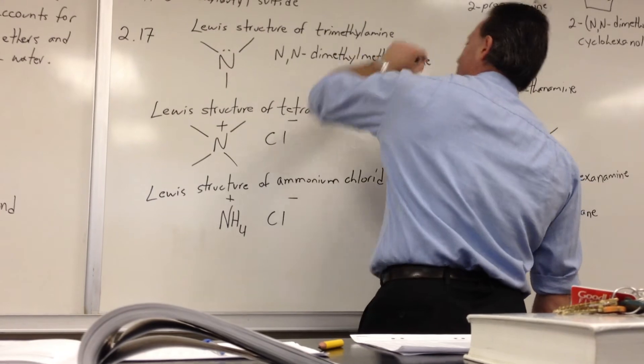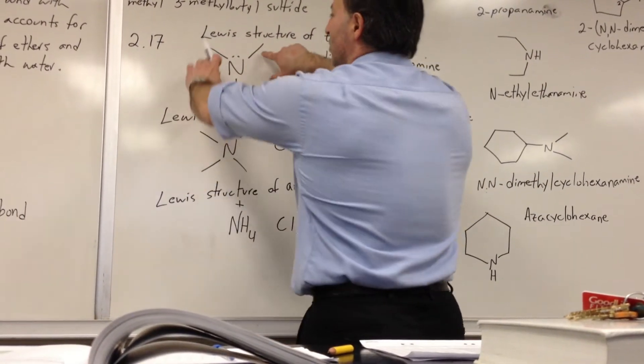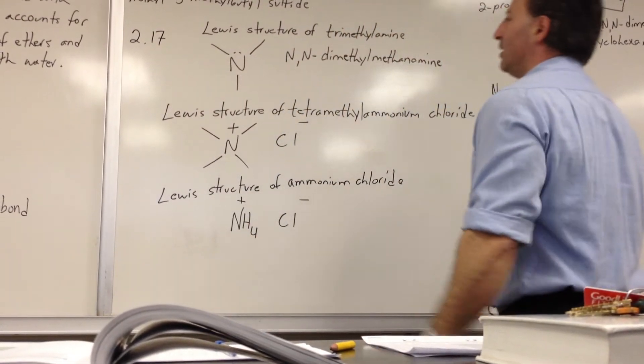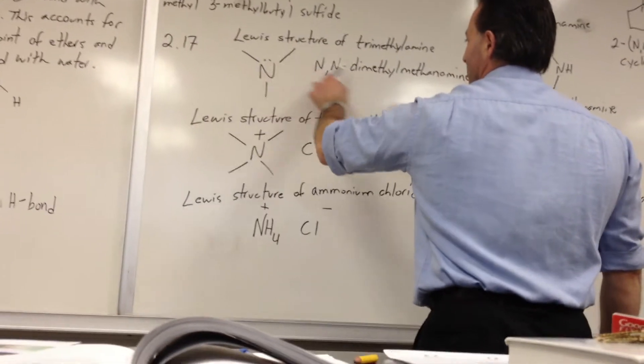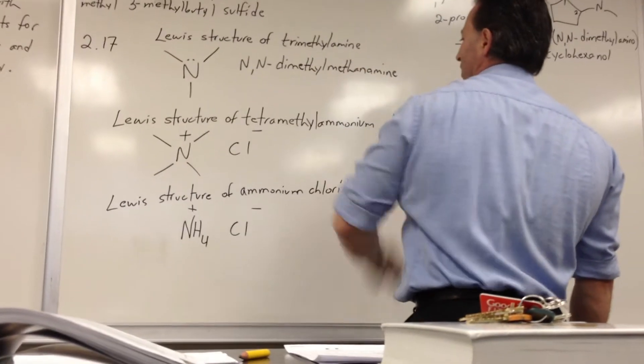The correct IUPAC name for this substance would be N,N-dimethylmethanamine. Because the longest continuous chain, pick one, is one carbon long. And then there's two other methyl groups attached to the nitrogen atom. So N,N designates these two methyl groups attached. Dimethyl and then methanamine designates the longest chain.